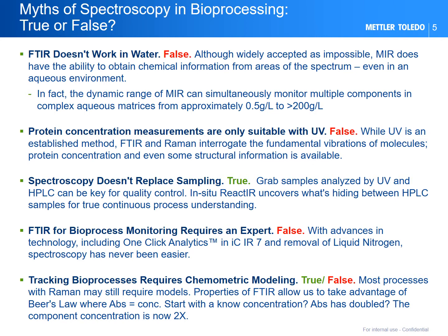Regarding the assumption that tracking bioprocesses requires chemometric modeling — while both true and false in certain situations — most processes with Raman may still require models. However, properties of FTIR allow us to take advantage of Beer's law, where absorbance equals concentration. So if we start with a known concentration and our absorbance has doubled, then the component concentration is now 2x.